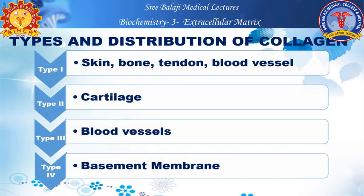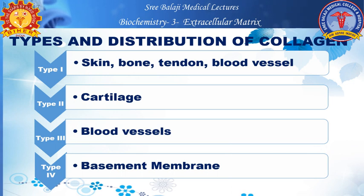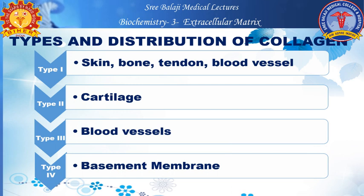There are various types of collagen, and at least four types we need to know. Type 1 is present in skin, bone, tendon, and blood vessels. Type 2 is present in cartilage. Type 3 is in blood vessels. And Type 4 is in the basement membrane.